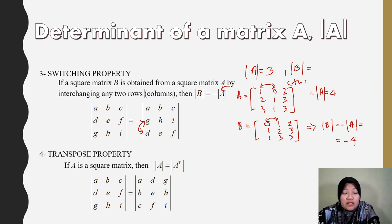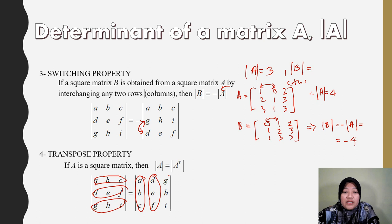Transpose property: the determinant is unchanged by transposition, meaning det(A^T) = det(A). Even if we swap rows to columns, the determinant remains the same.